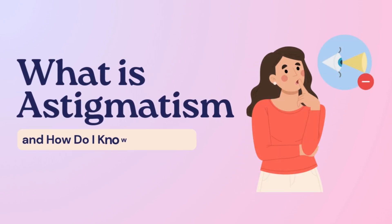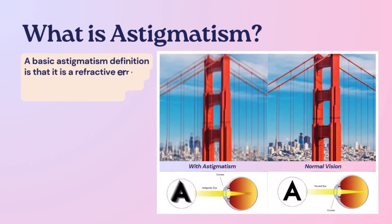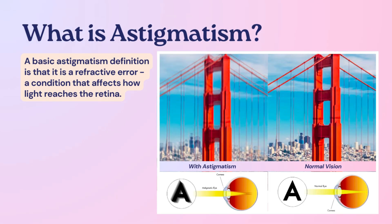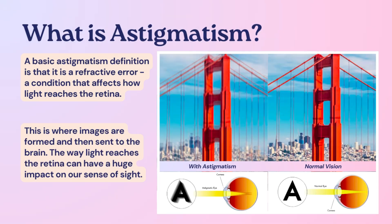What is astigmatism and how do I know if I have it? A basic astigmatism definition is that it is a refractive error — a condition that affects how light reaches the retina. This is where images are formed and then sent to the brain, so the way light reaches the retina can have a huge impact on our sense of sight.